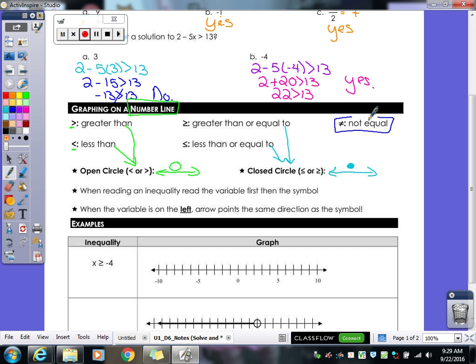And then we also have the not equal to. So if you have an equal sign with a line through it, that means it's not equal to that number. So x is not equal to 5 for example.